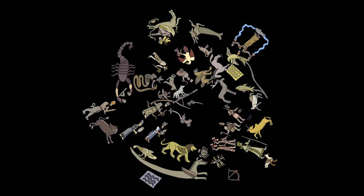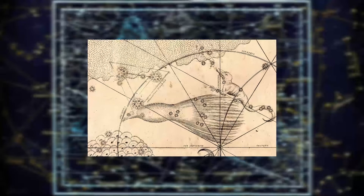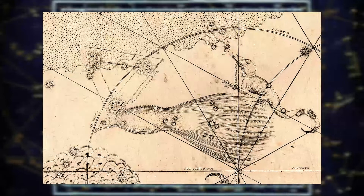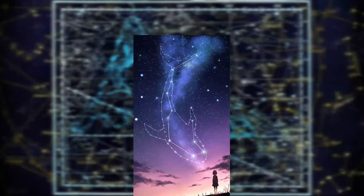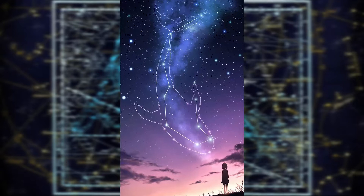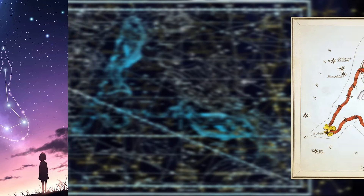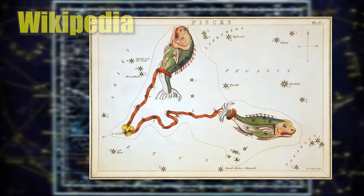The recognition of constellations has changed significantly over time. Many changed in size or shape. Some became popular, only to drop into obscurity. Some were limited to a single culture or nation. We think of the signs of the zodiac when constellations are mentioned, but the zodiac constellations are just 12 of the myriads that once existed, when skies were clear and eyesight undamaged by too much close work.